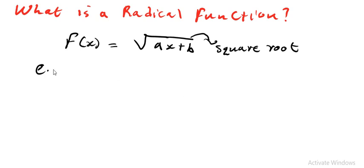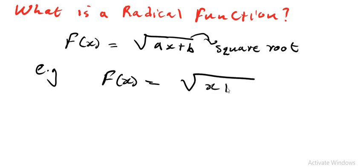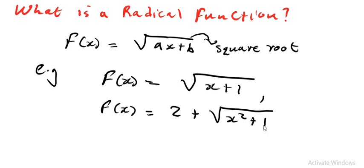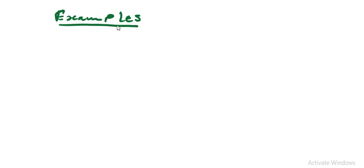If I were to give examples of radical functions, I can talk of f(x) = √(x + 1), or f(x) = 2 + √(x² + 1). So these are examples of radical functions. Let me quickly look at how you can find the domain of a radical function with some examples.